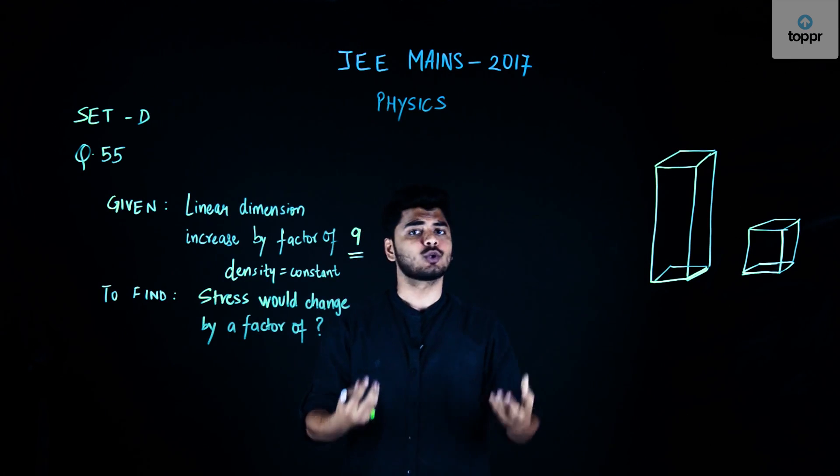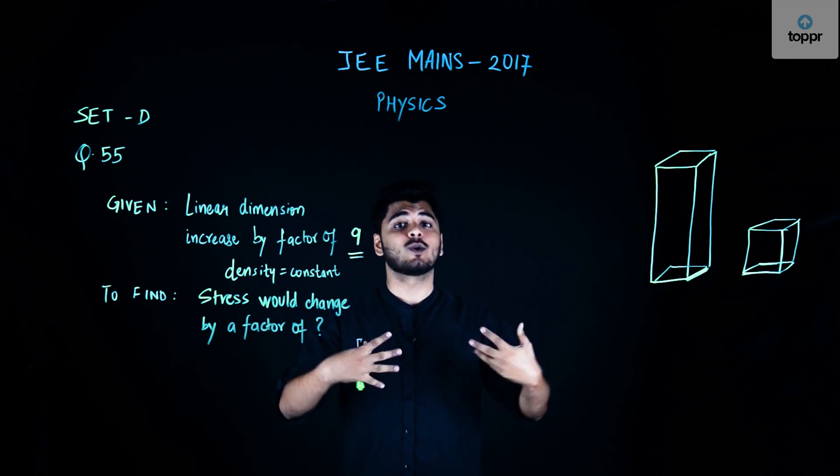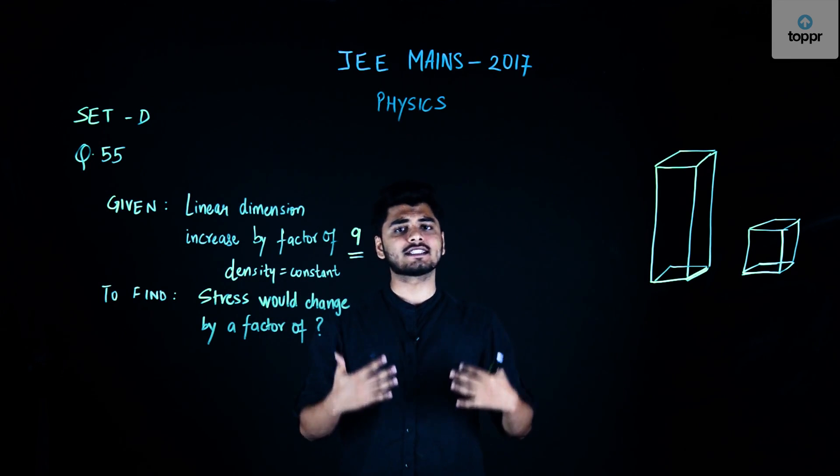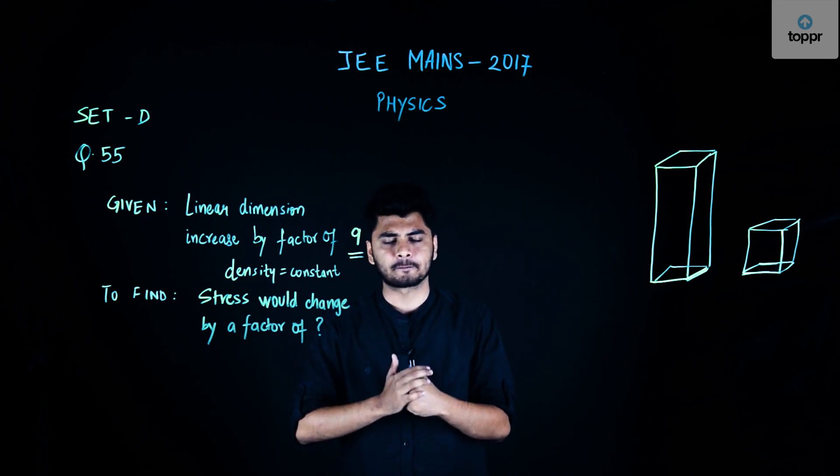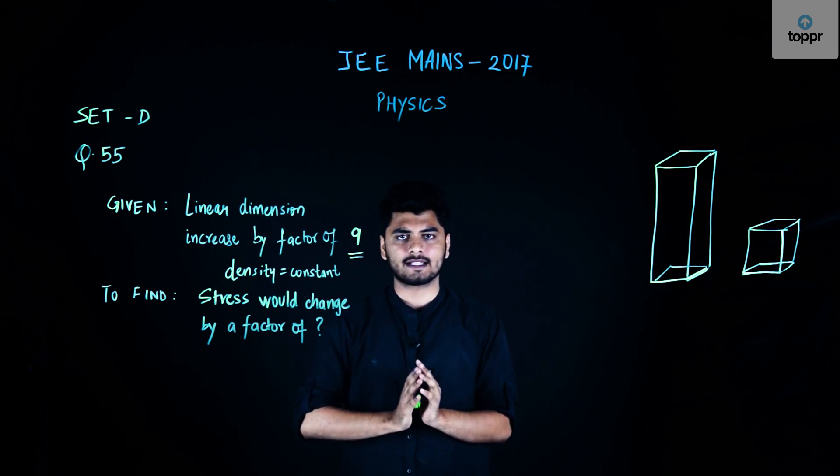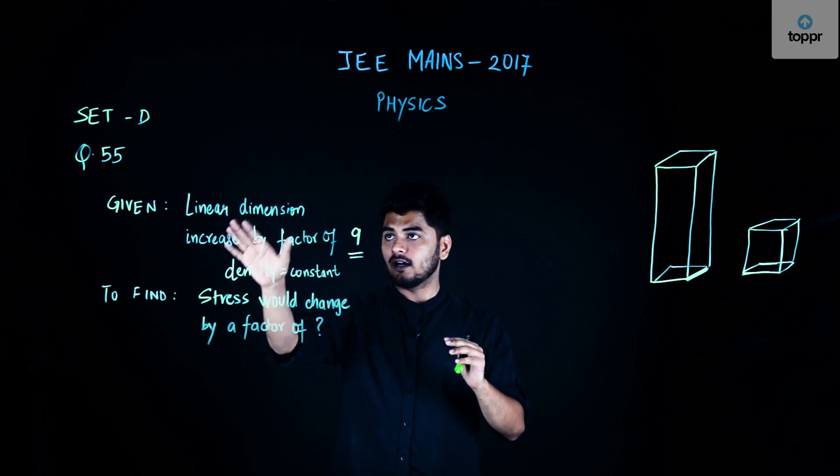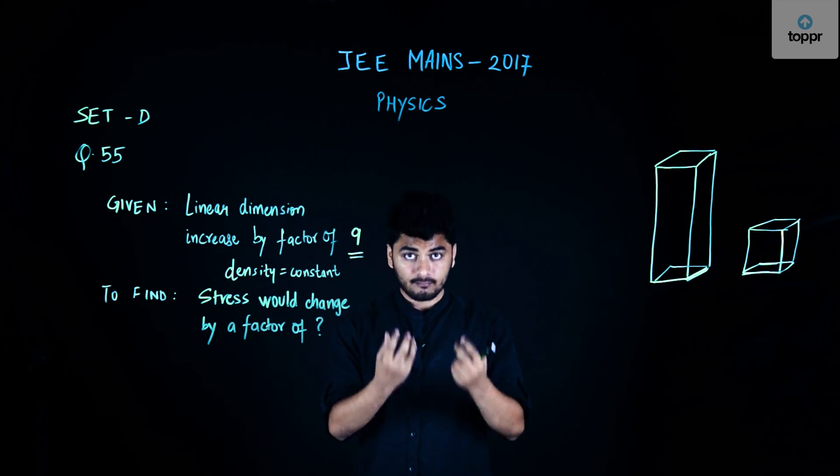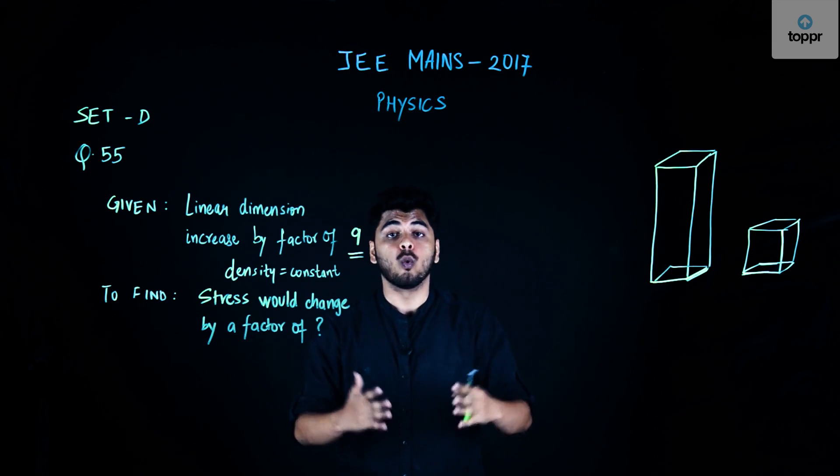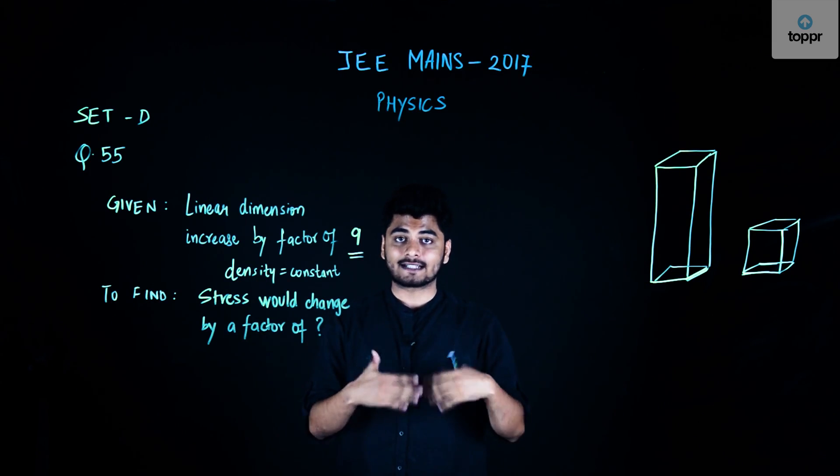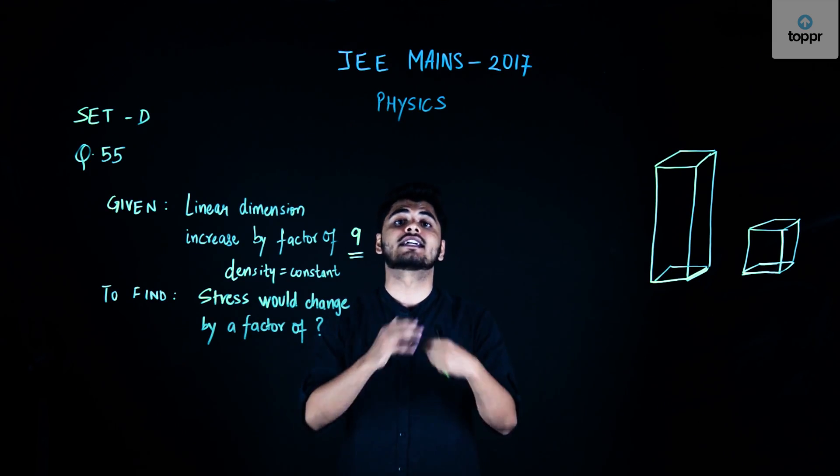Throughout this process in which I convert into a giant, my density remains constant. My linear dimension grows 9 times. The question asks: if this process takes place overnight, what would be the factor by which the stress in my legs would increase?